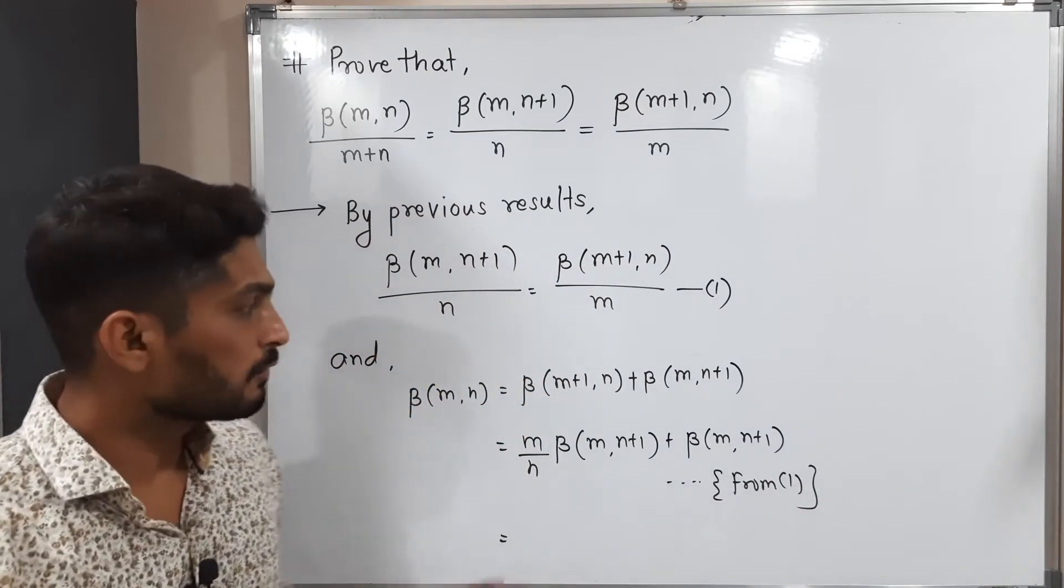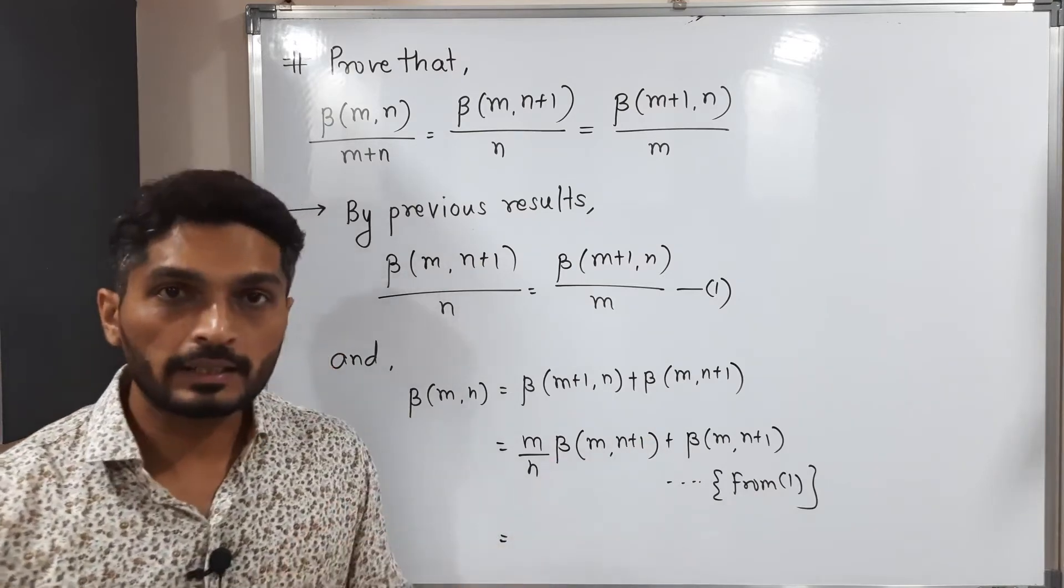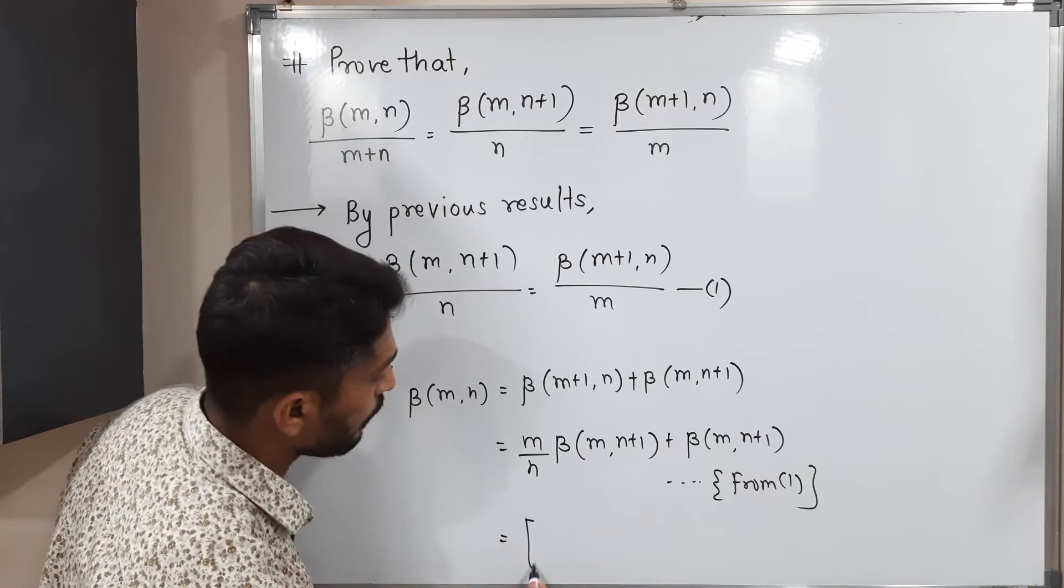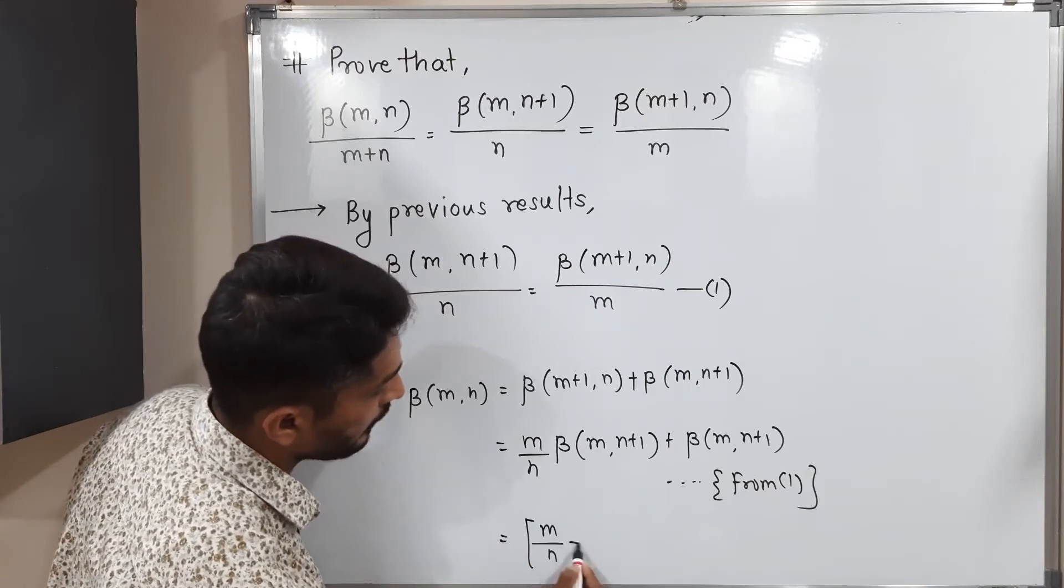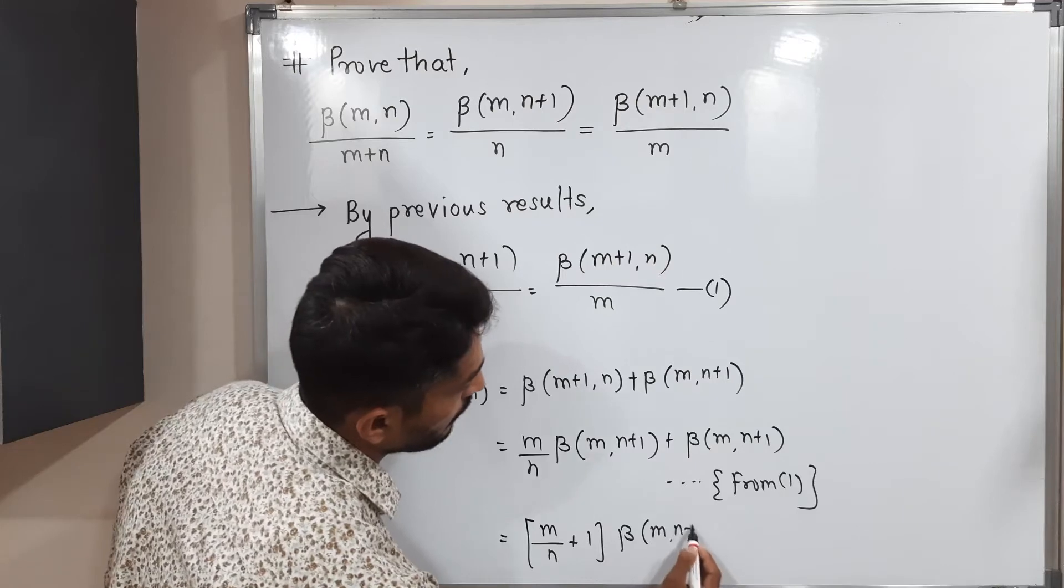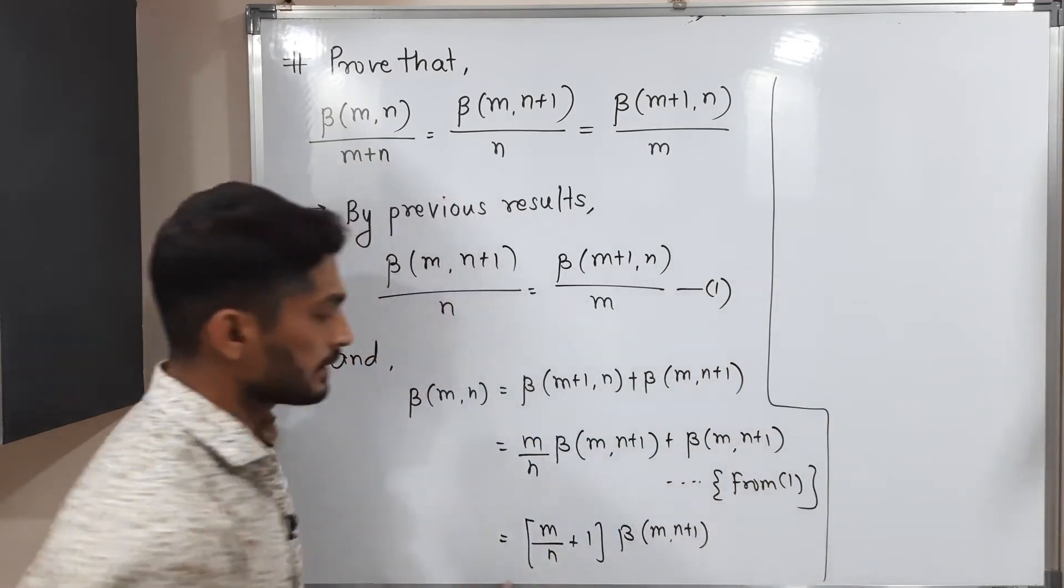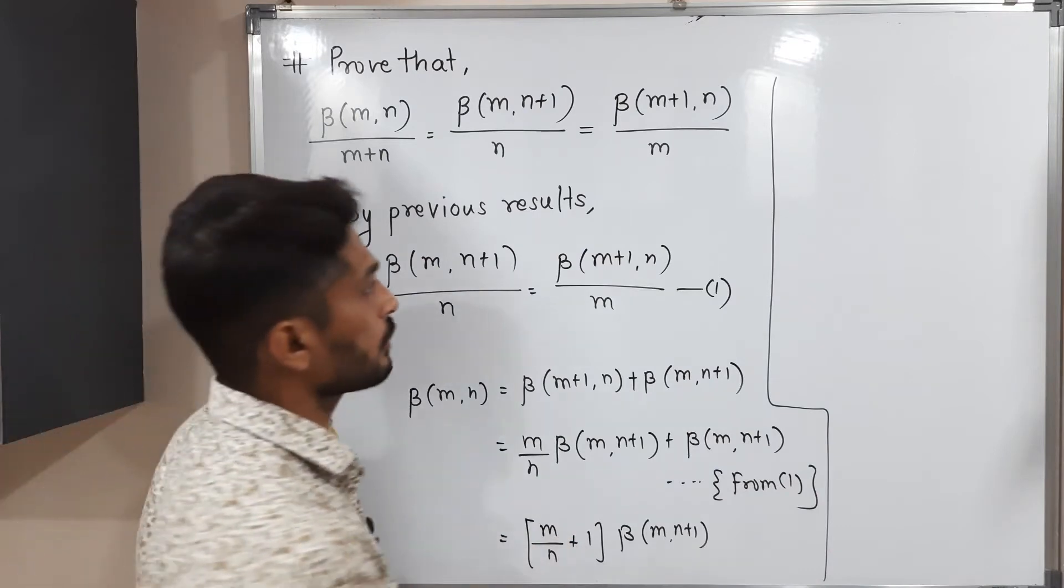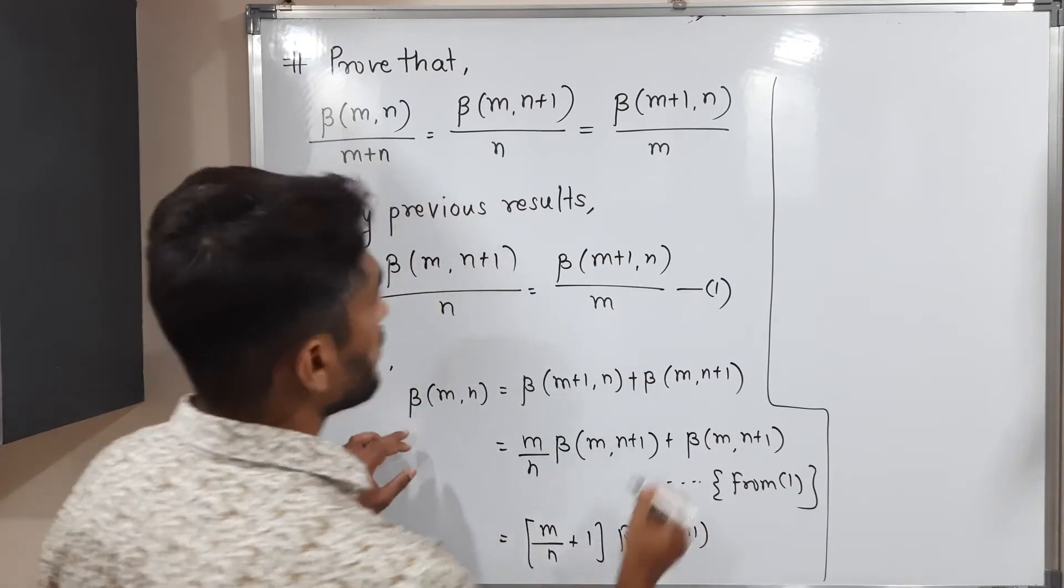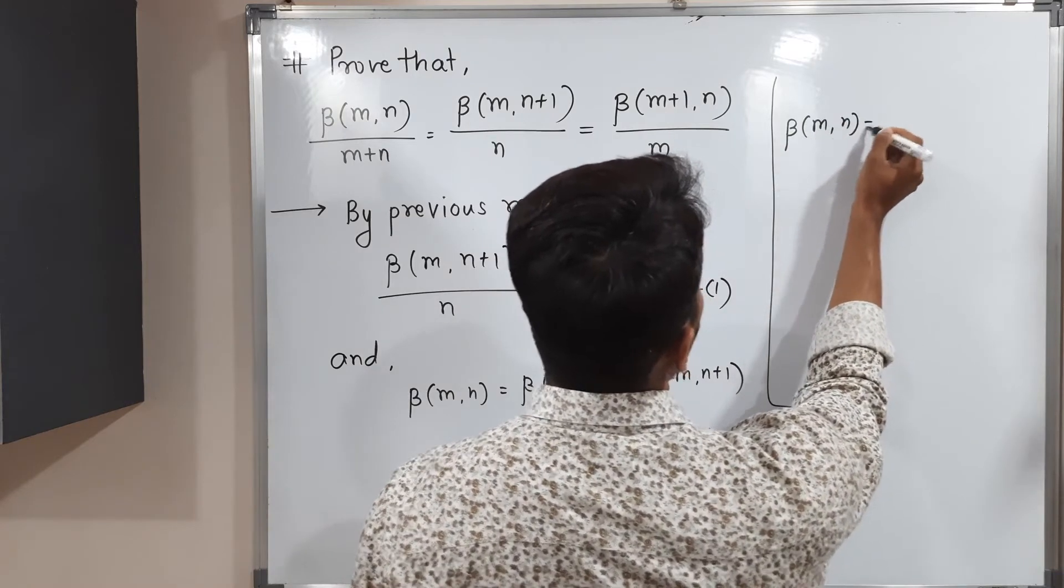Fortunately we have got these two terms are equal, so we can take it common. If you take it common, we will have (m/n + 1) times beta of m, n+1. You can easily see we can cross multiply. After cross multiplication, let me write the left hand side: beta of m, n. We started with this term.